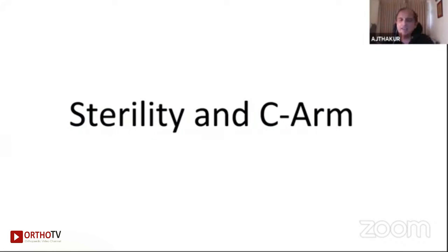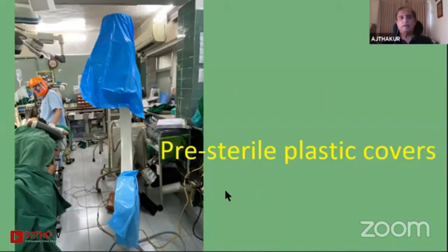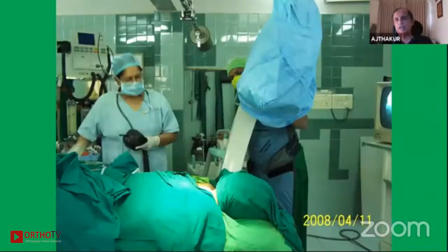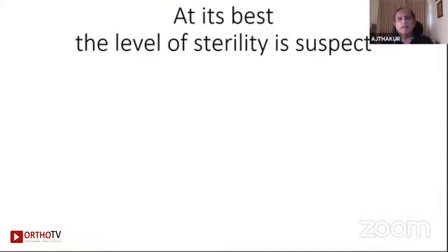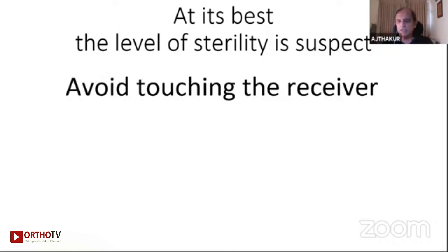Sterility and C-arm is the last section of my talk. These pre-sterile plastic covers are available. They come ready-made and we just start to use them. But if you are economy-minded, then you can get a cover stitched of non-woven material and then autoclave them and use them. I've been using both types. Both of them are comfortable. However, at the best, the level of sterility of image intensifier is suspect. I avoid touching the receiver anytime. Enough staff is available to make the adjustments and there is no desperation to actually hold the receiver and move it.